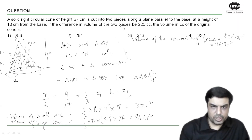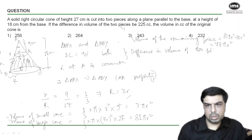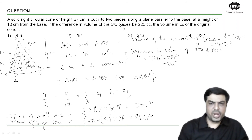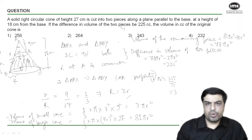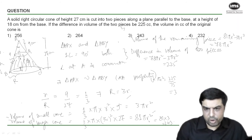The difference in volume of the two pieces is 78πr² minus 3πr², which equals 75πr², and that is given as 225 cc. So πr² equals 225 divided by 75, which is 3. We want the volume of the original cone, which is 81πr². Substituting πr² as 3, we get 81 × 3 = 243 cc. That is the answer — option 3.